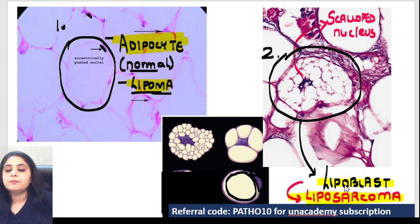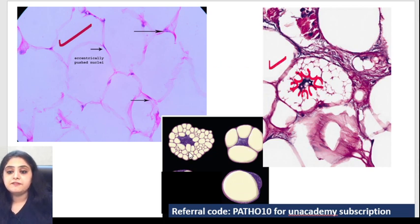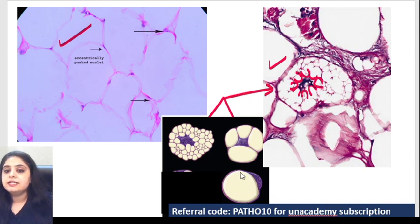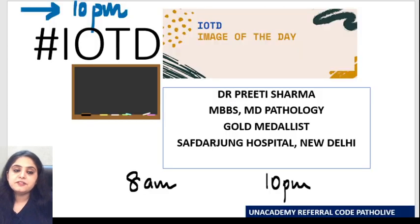So this is how you define a lipoblast, and a lipoblast is something that you see in a liposarcoma. To summarise: normal adipocyte equals normal fat equals benign tumour equals lipoma. And this is a lipoblast — these two become lipoblasts that you see over here, whereas this one becomes the normal adipocyte. That finishes off your IOTD — image of the day.